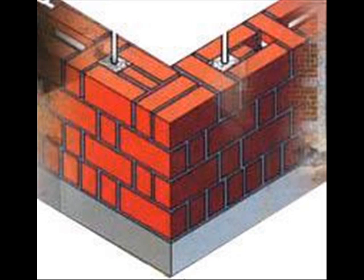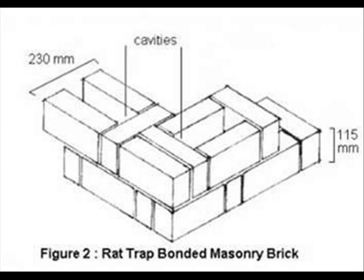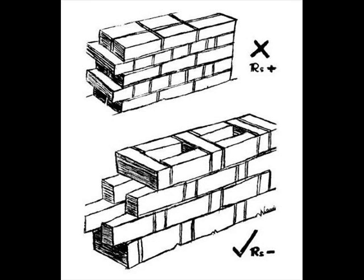In reinforced concrete cement frame structures, the filler walls can be made of rat trap bonds. There are minor cautions to be taken: it has to be constructed by masons trained in rat trap bonds because there could be wastage of mortar falling into the gaps. Concealed wiring and plumbing is to be avoided or well planned ahead of construction.